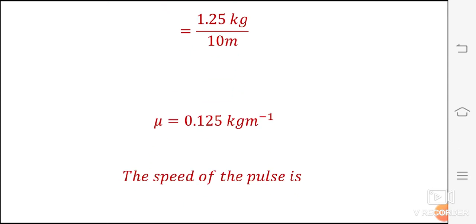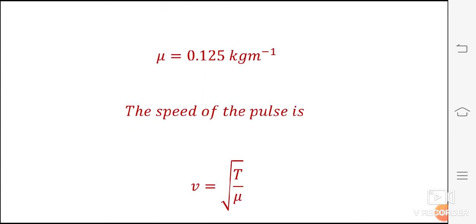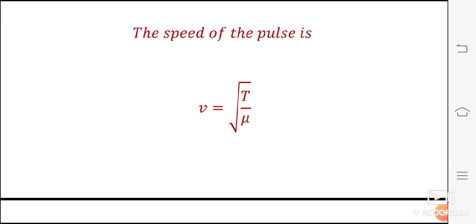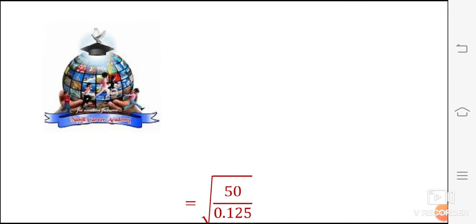The speed of the pulse is: speed of the pulse V is equal to square root of T divided by μ. So apply the value of T and μ.